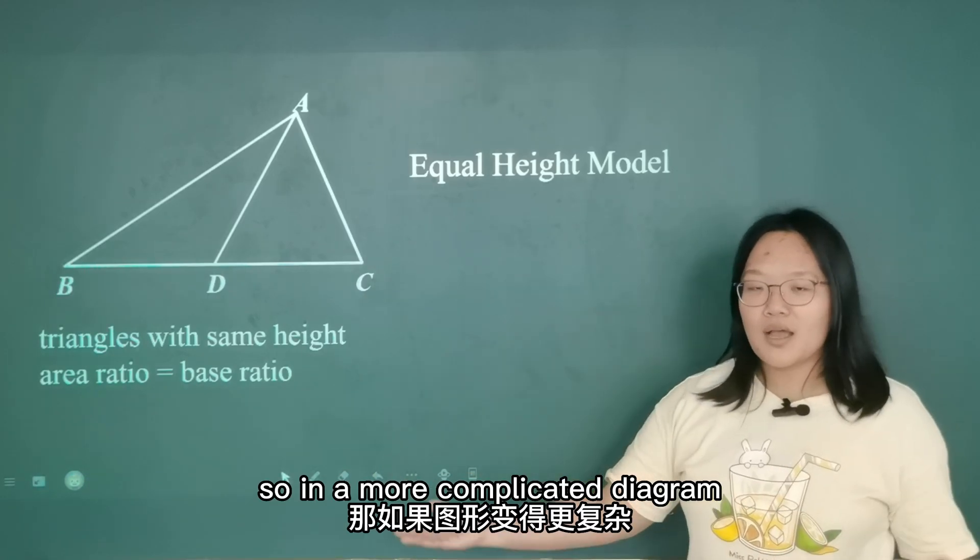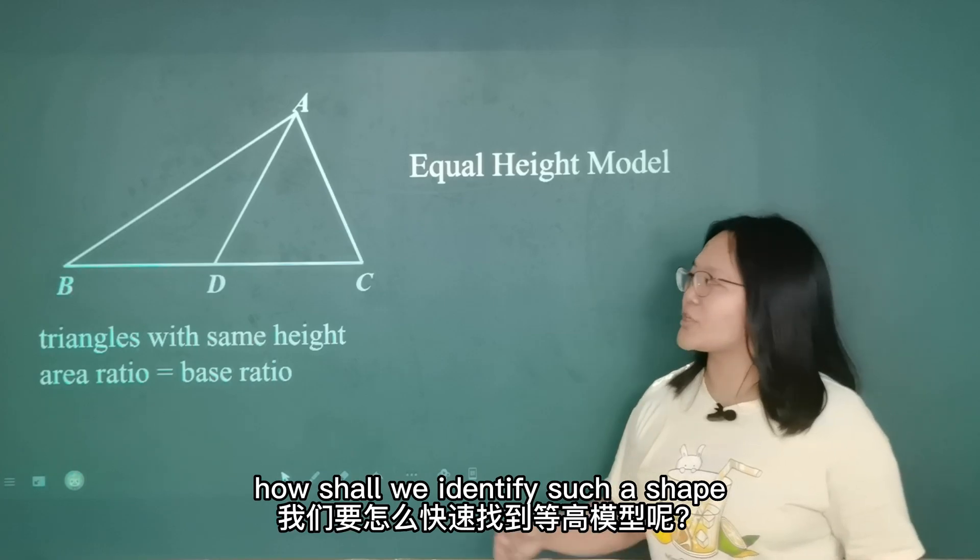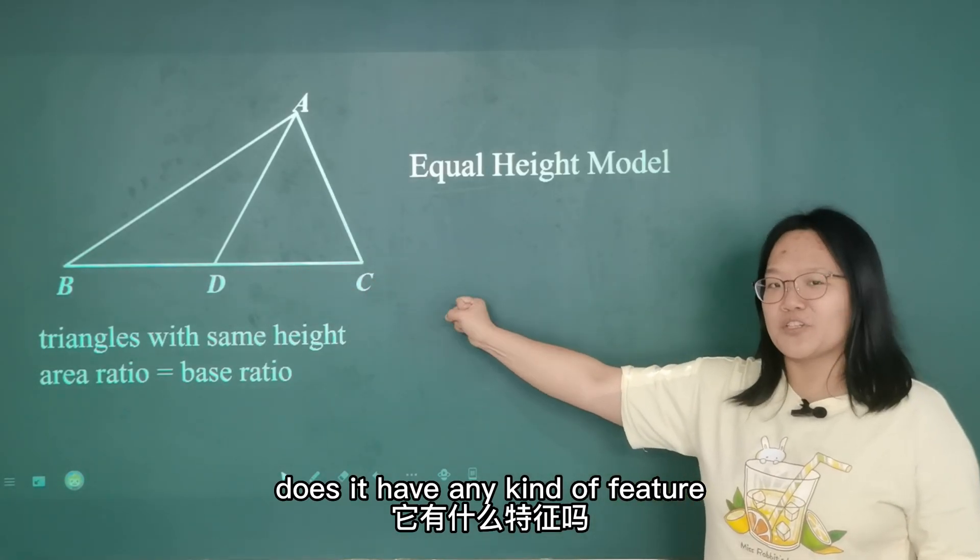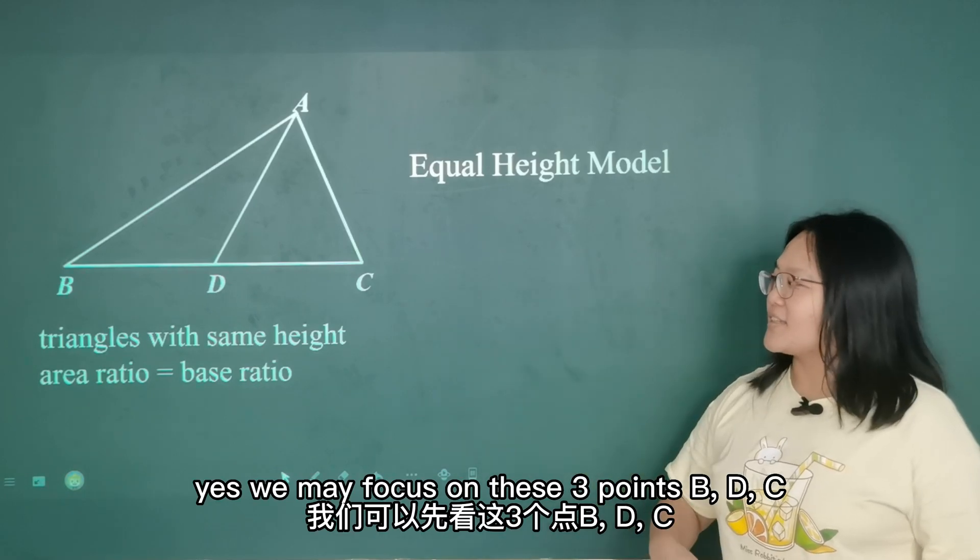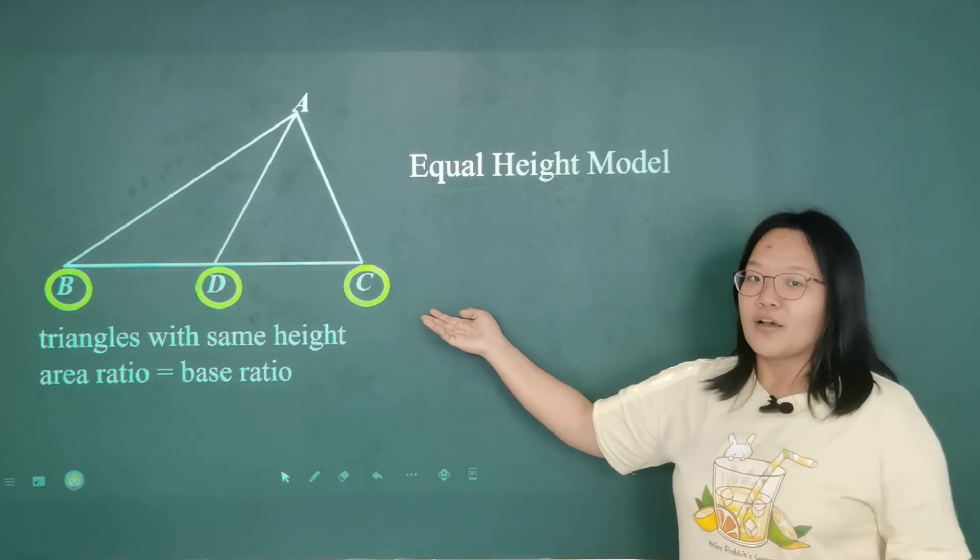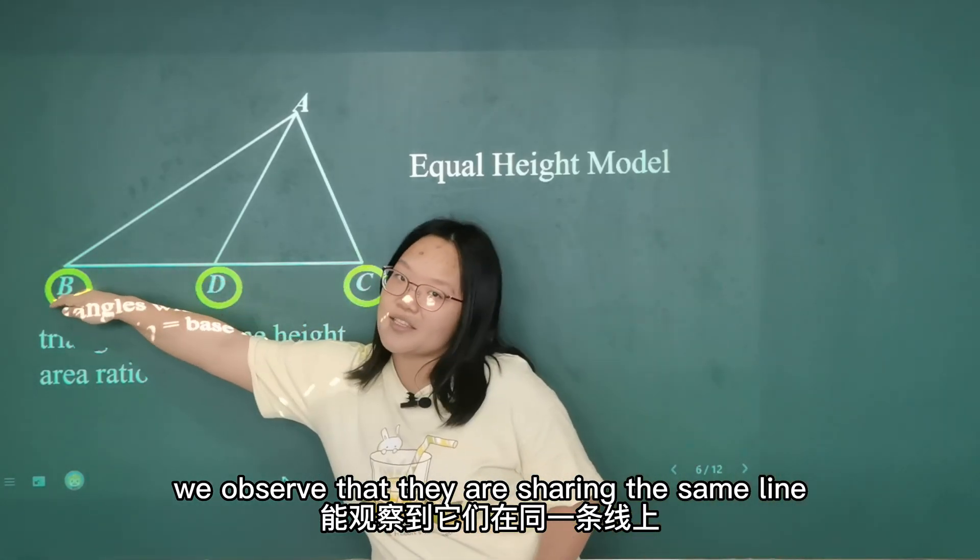So in a more complicated diagram, how shall we identify such a shape? Does it have any kind of feature? Yes. We may focus on these three points, B, D, C. We observe that they are sharing the same line.